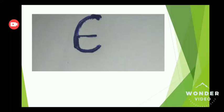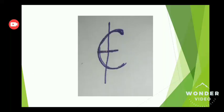This sign (∈) is used for 'belongs to', 'member of', or 'an element of' the given set. This sign (∉) is used for 'not belongs to' or 'not an element of' the given set.